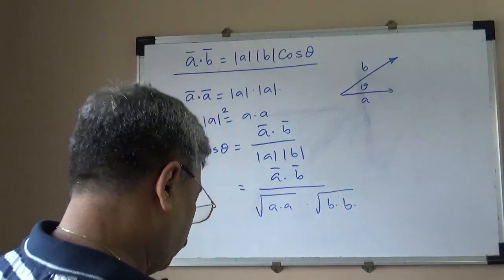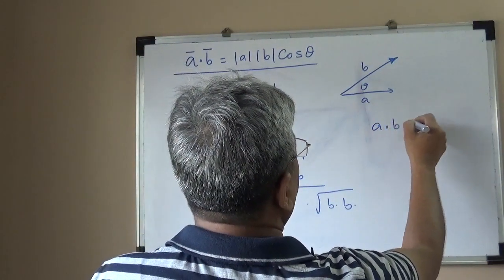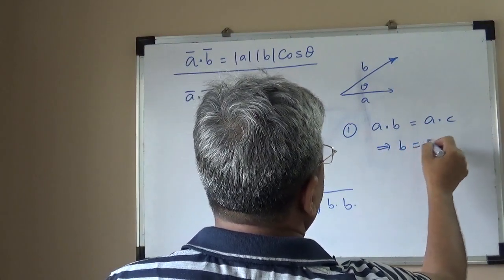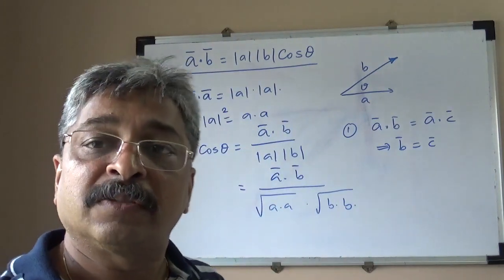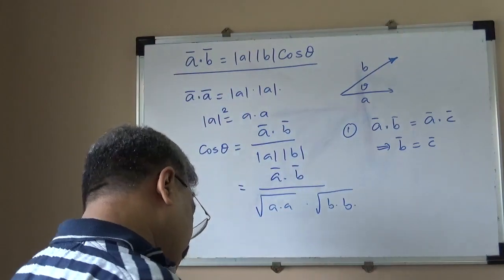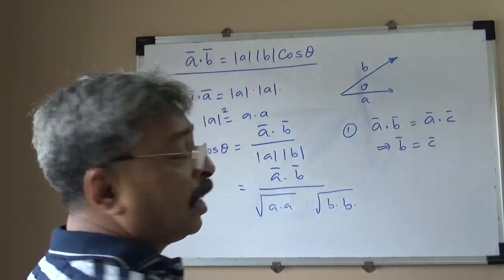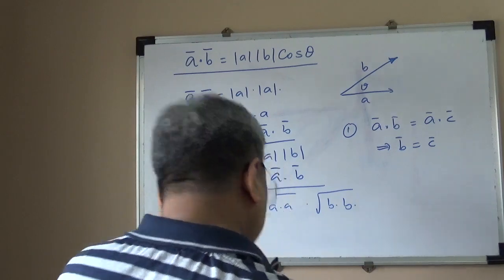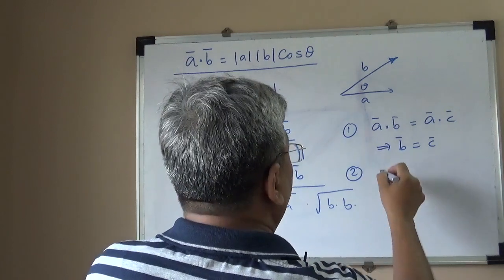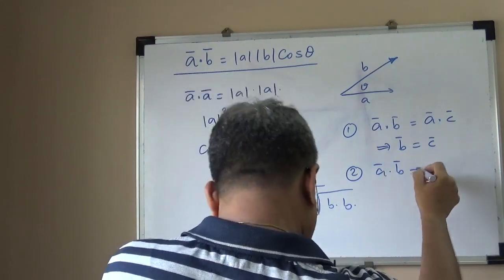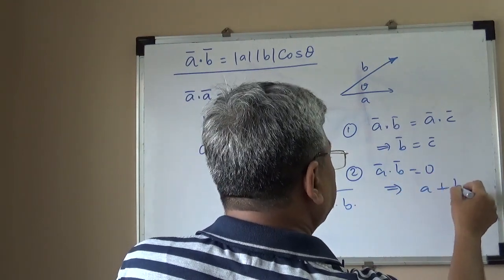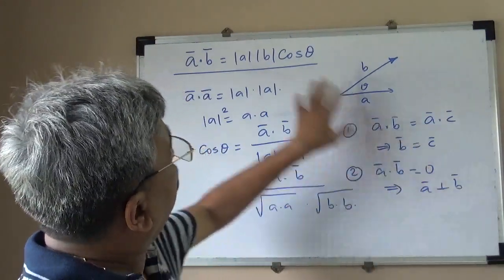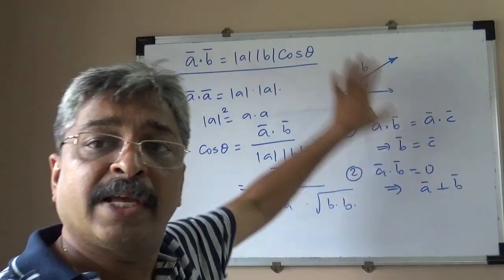I have a couple of true-or-false questions. Question 1: If A·B = A·C, does this imply B = C? Think about it and keep your answer ready. Question 2: A·B = 0 implies A is perpendicular to B — true or false? Keep your answer ready. These questions relate to the definition of scalar product, so if you have understood the definition correctly, you should get the answers right.